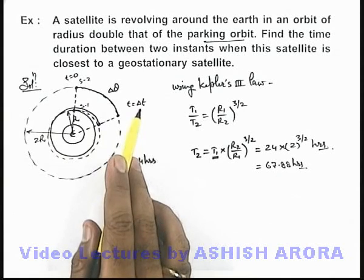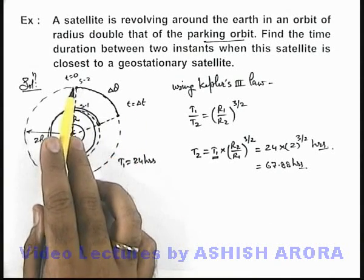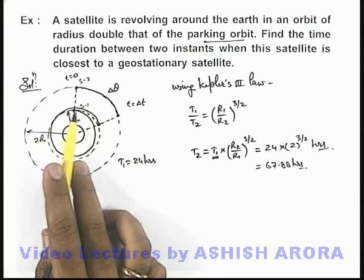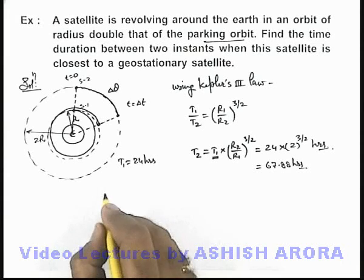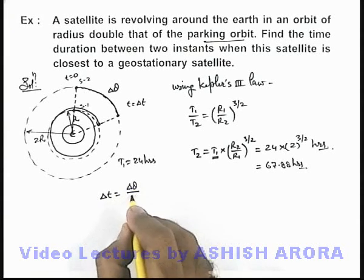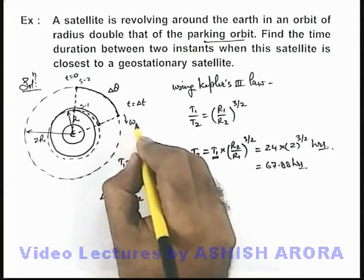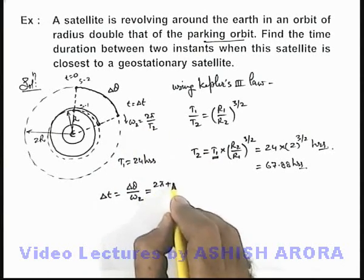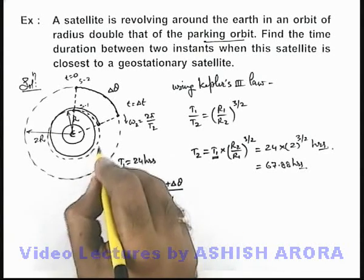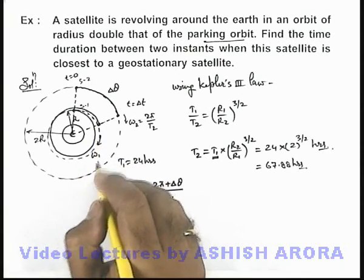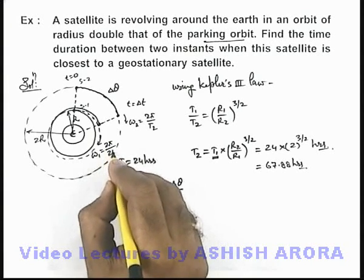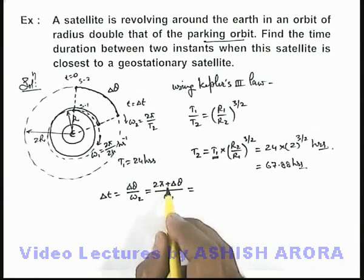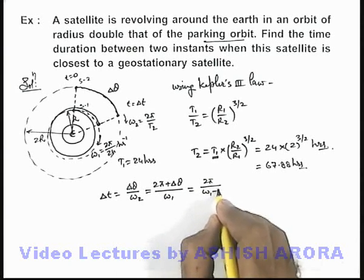To calculate delta t — the duration in which satellite 2 traverses angle delta theta — in that same duration the geostationary satellite traverses angle 2π plus delta theta. So we can write: delta t = delta theta / ω2 = (2π + delta theta) / ω1. Subtracting numerator and denominator, this gives delta t = 2π / (ω1 − ω2), where ω1 = 2π/24 and ω2 = 2π/T2.